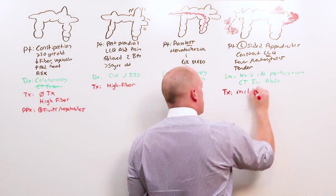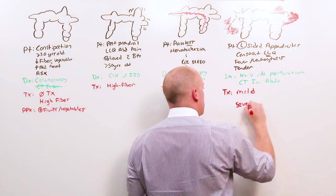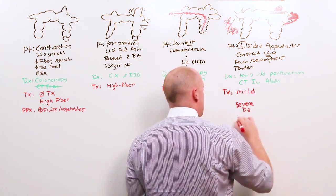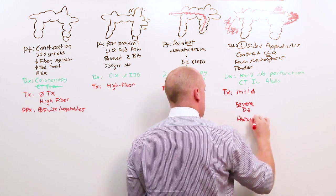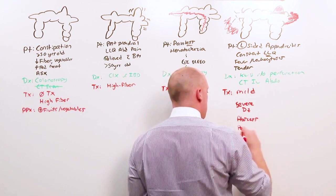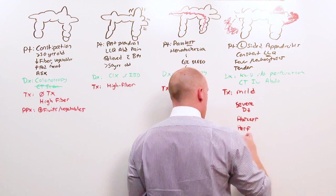But let's keep it simple. You're going to have mild disease, severe disease, abscess, perf, and refractory.